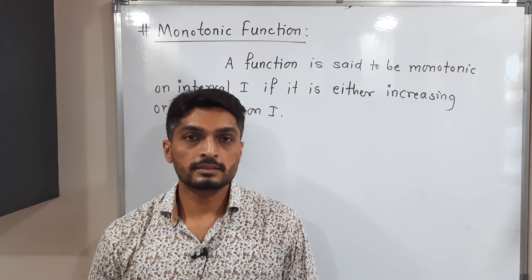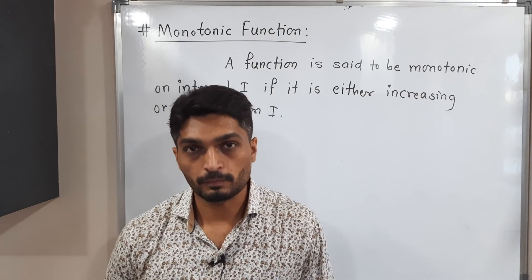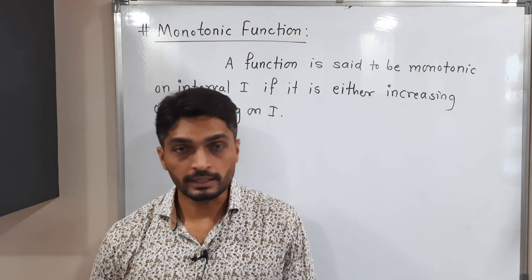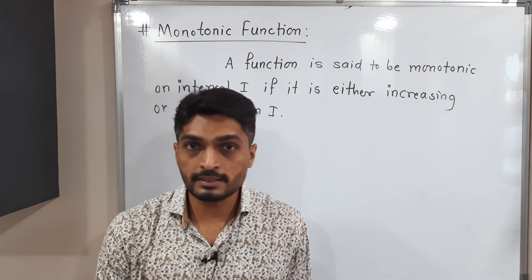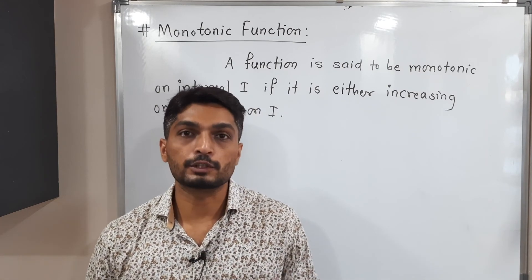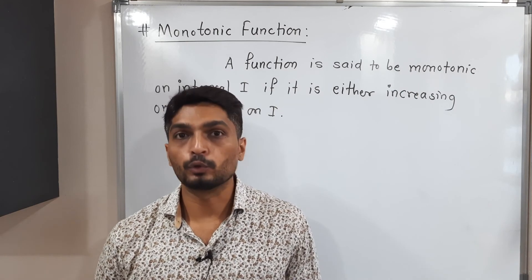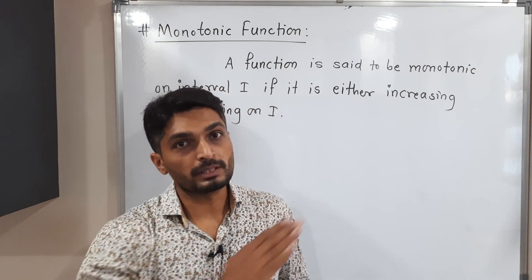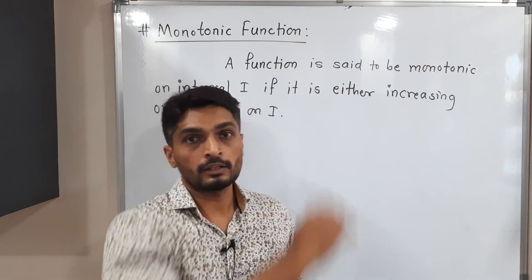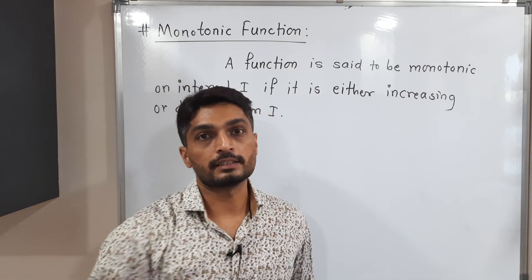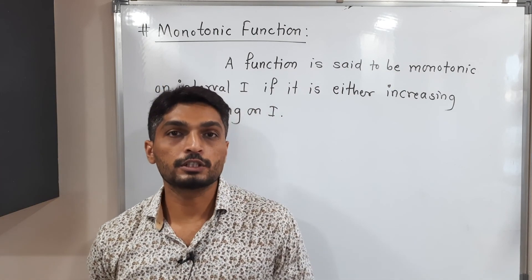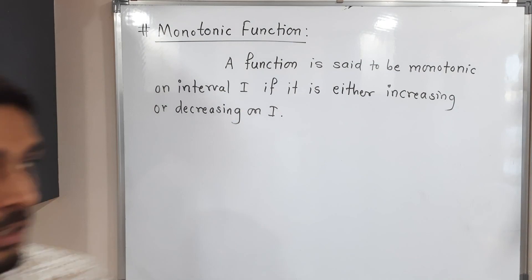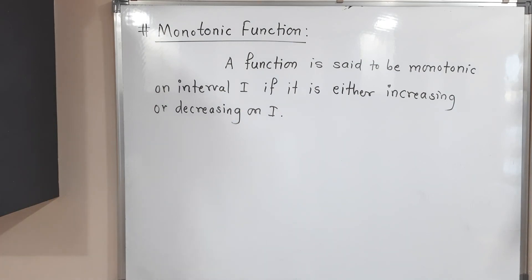Let us discuss what a monotonic function is. A function is said to be monotonic if it is either increasing or decreasing — it must satisfy one of the two conditions. So either it should be increasing or it should be decreasing; then we say the function is a monotonic function.